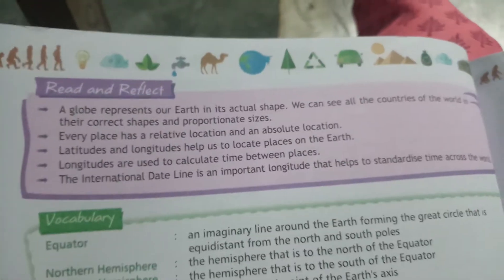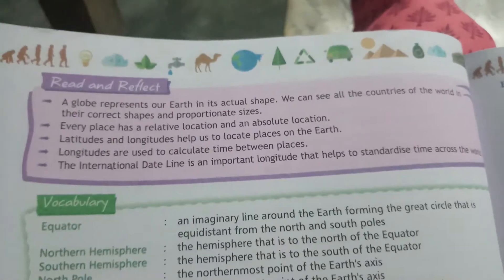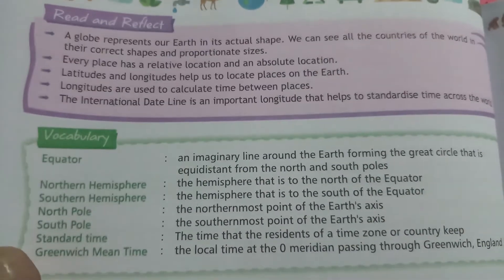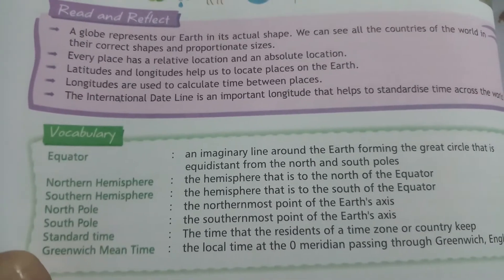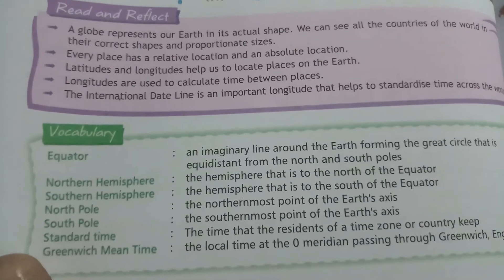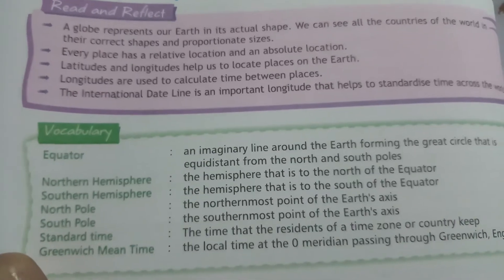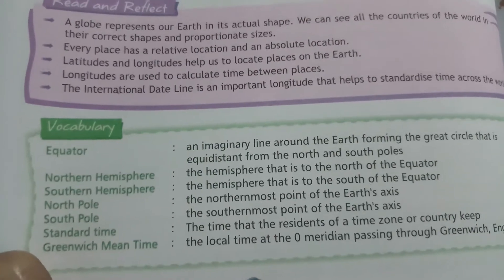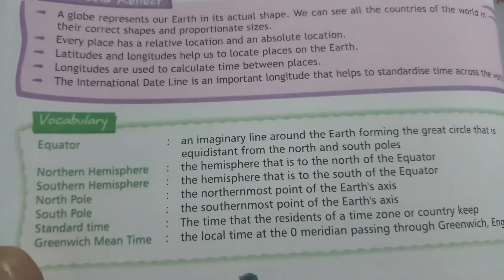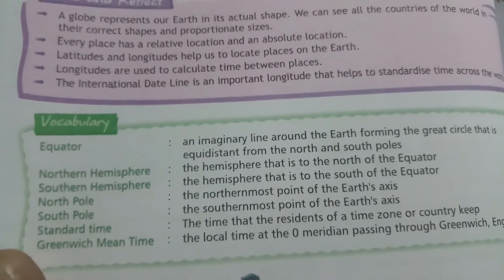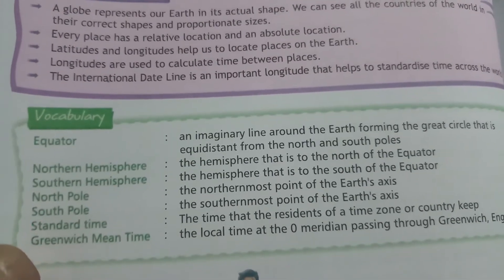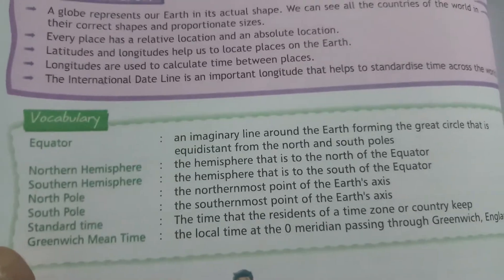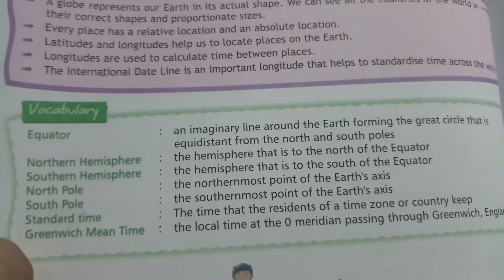Great reflection. A globe represents our Earth in its actual shape. We can see all the countries of the world in their correct shapes and proper sizes. Every place has a relative location and an absolute location, and latitude and longitude helps us to locate places on the Earth.